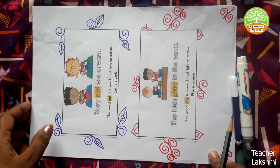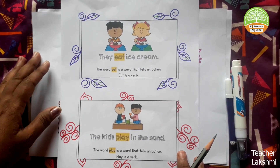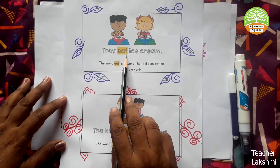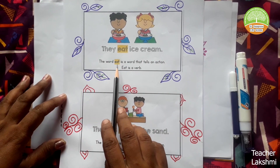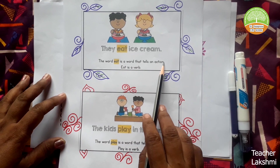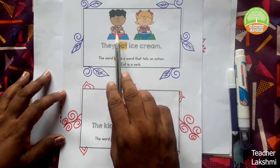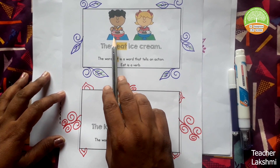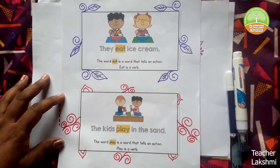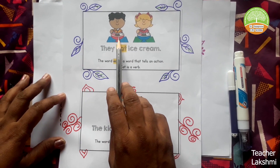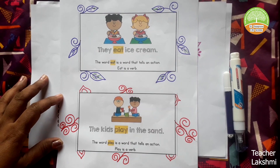Here, we are seeing some examples with the pictures. What are they doing here? They eat ice cream. The word 'eat' is a word that tells an action. We can see these children are eating something — eating ice cream. Eat is a verb, that means an action word.